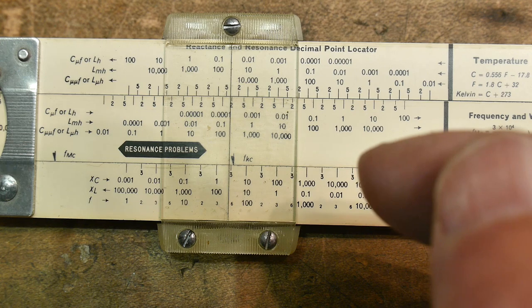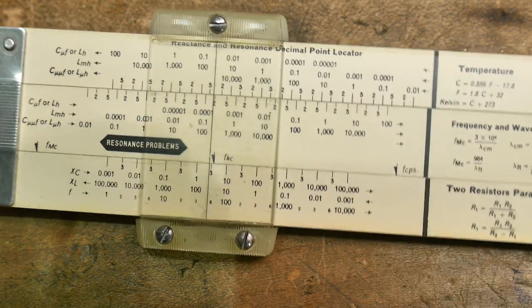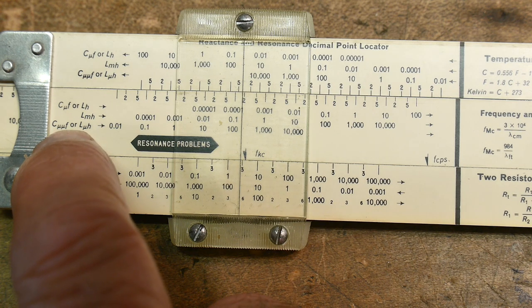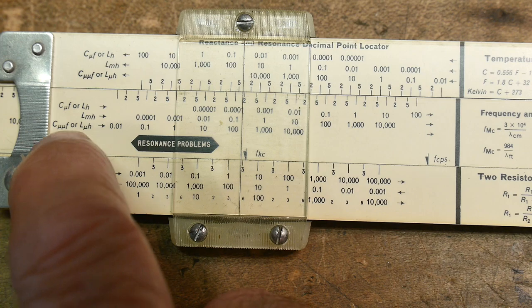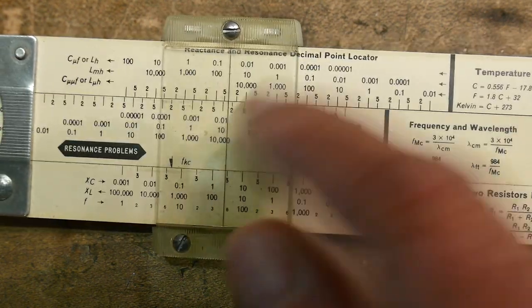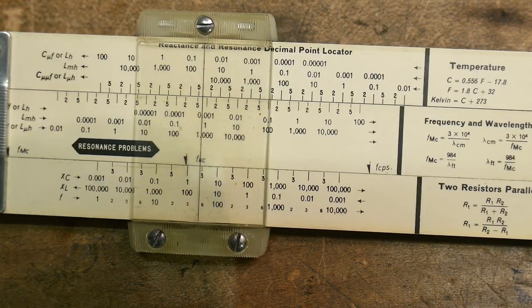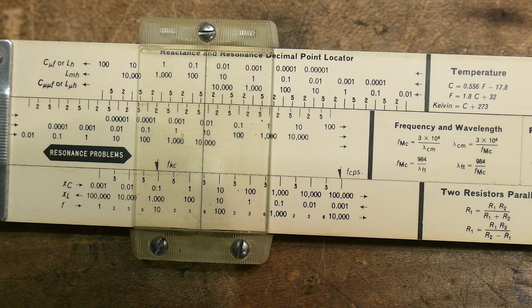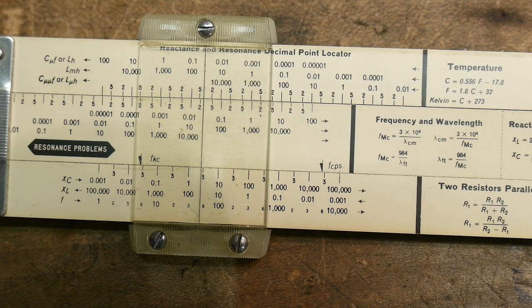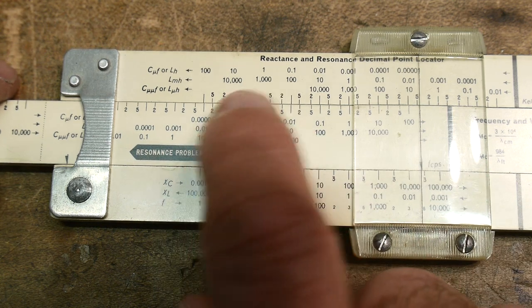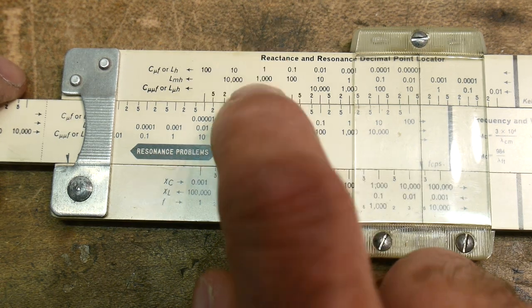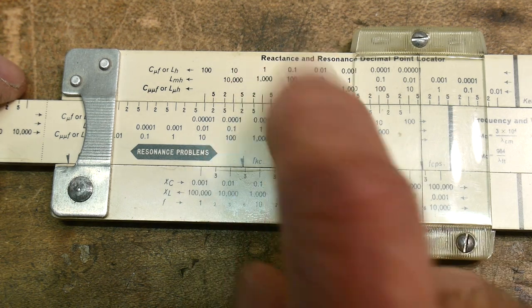Now, the other number we have is 0.03 microfarads. So we have to go to these scales. We have microfarads, millihenrys, and micro microfarads. So the only capacitors we have are microfarads or picofarads. So we have microfarads. We have 0.03. So this is 0.1. And here's 0.01. So we have to go to 0.1, and then it's 0.03. This is 0.02. 0.03 is right about there. I hope that makes sense. We have the capacitor and the inductor. It doesn't matter which one you use. As long as you have the ratio correct. So the ratio is right.